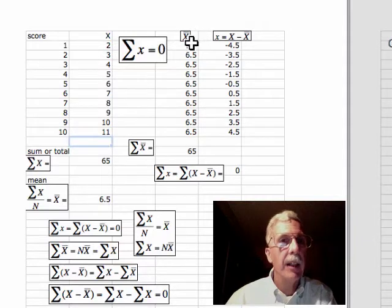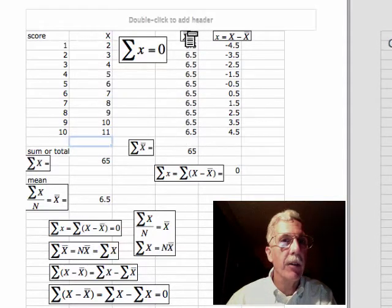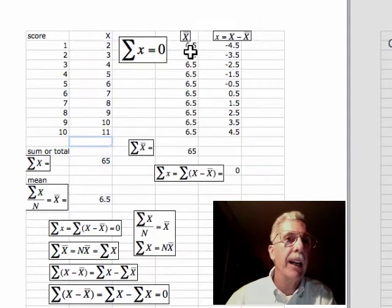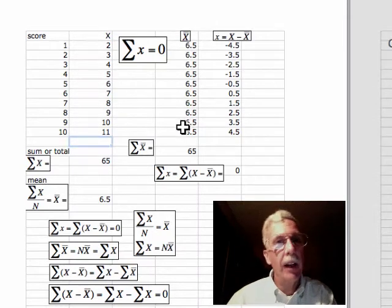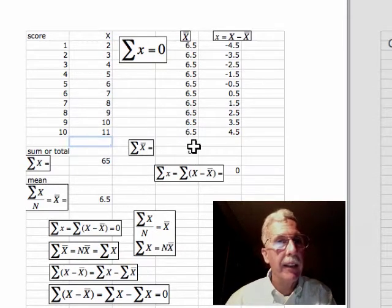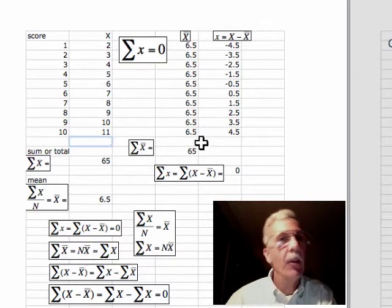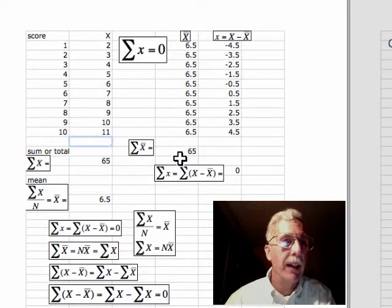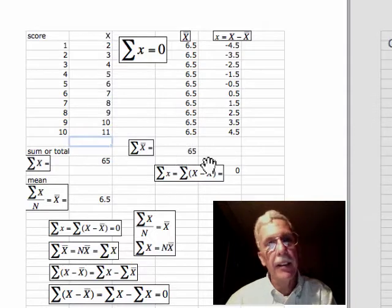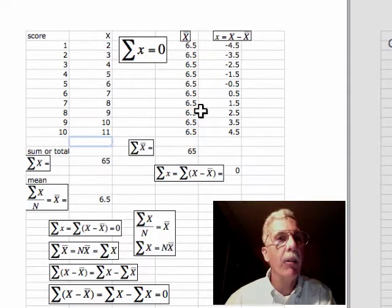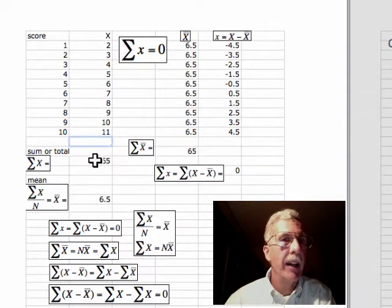In this column, I have reproduced the mean each time. So 6.5 is here over and over again. If we add these 6.5s up, we get a total of 65. Notice that the sum of the mean over and over again is the same as the sum of the raw scores.